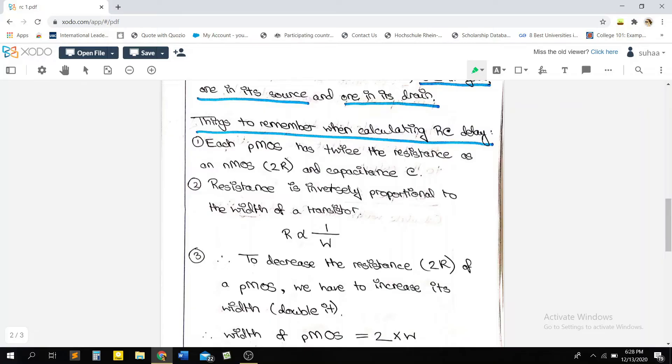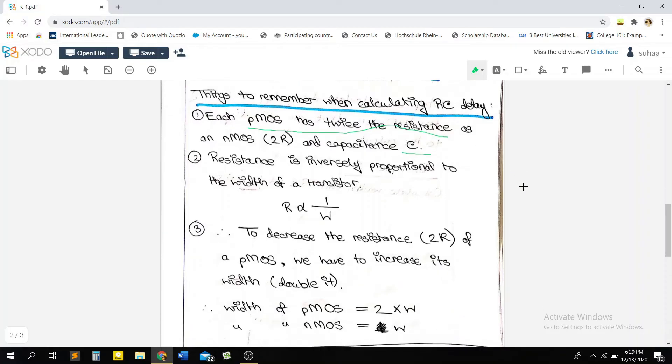When you're gonna be working on the math of the RC delay, you need to remember this concept here. The resistance of a PMOS is twice the resistance of an NMOS. I'm just going to repeat that. Get it into your head. The resistance of a PMOS is twice the resistance of a normal NMOS. It'll have the same capacitance, but it'll have twice the resistance.